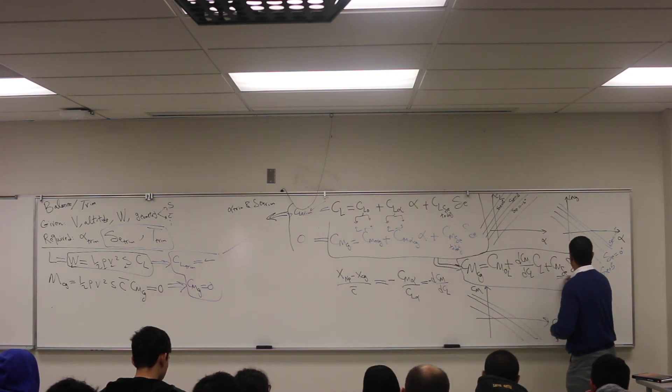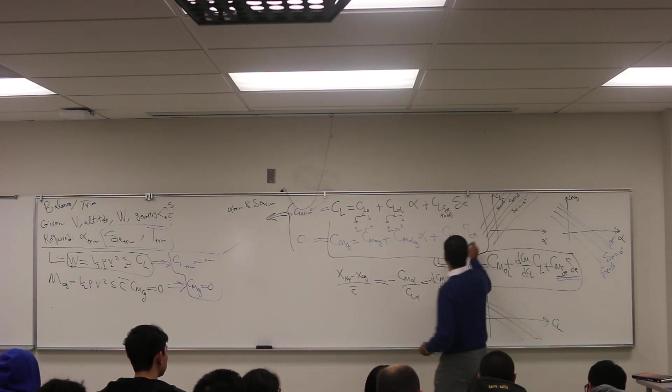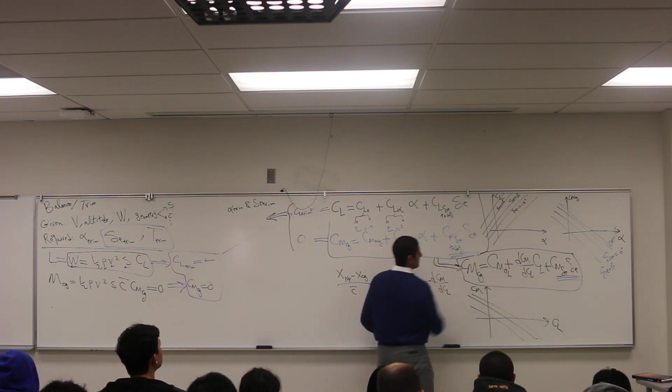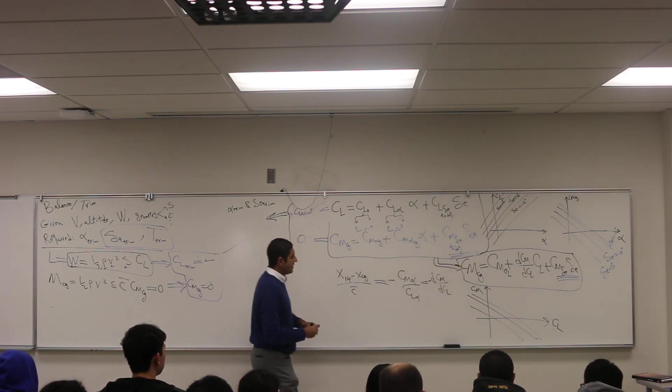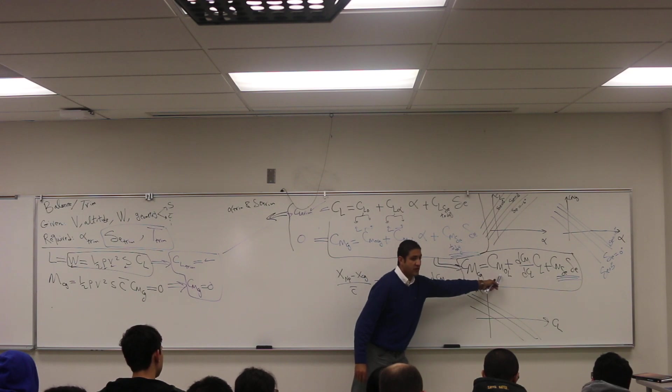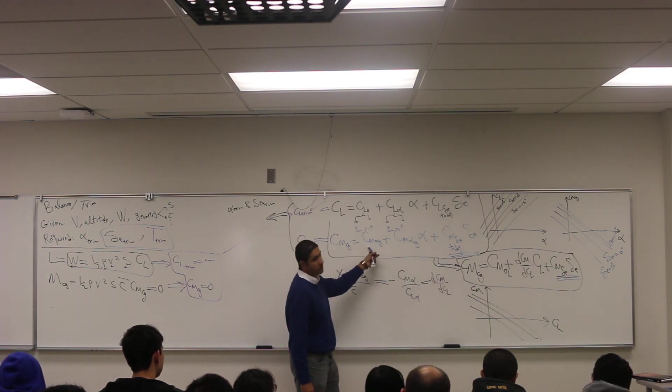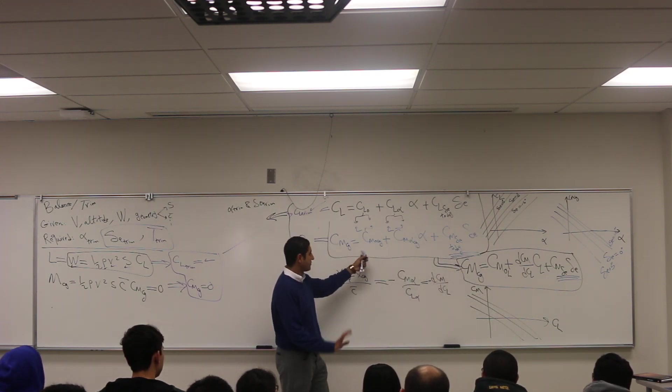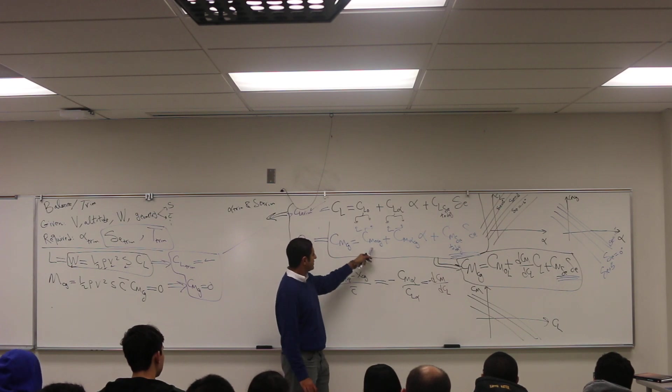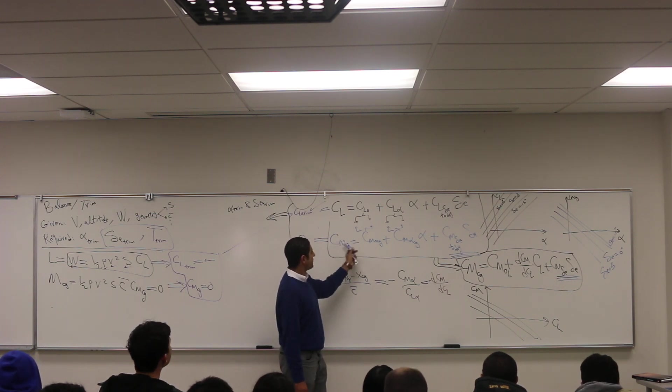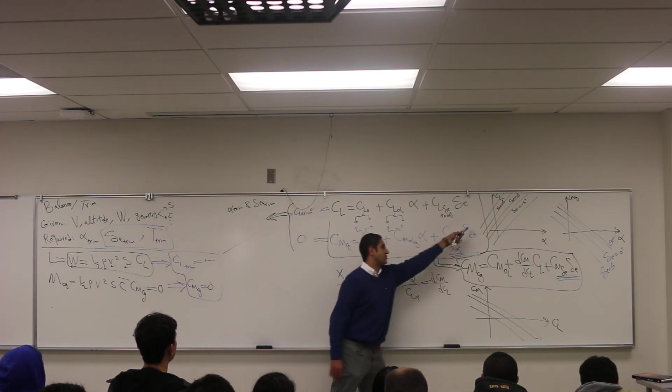This guy, CM_zero_lift, is not the same as CM_naught. So what about this one? This is a little bit confusing. CM_zero is the CM coefficient at zero alpha and zero delta elevator.